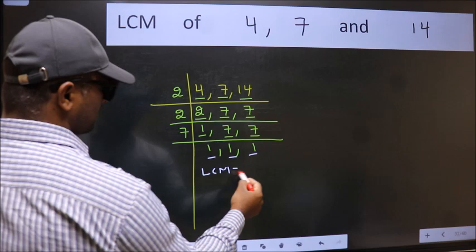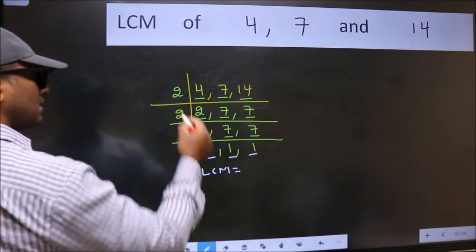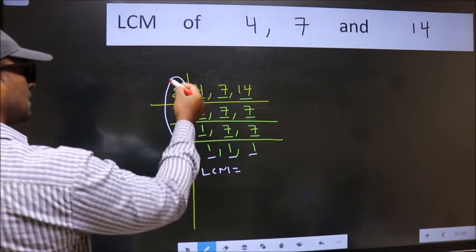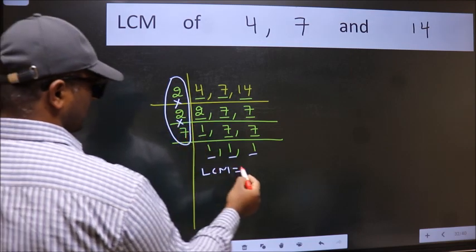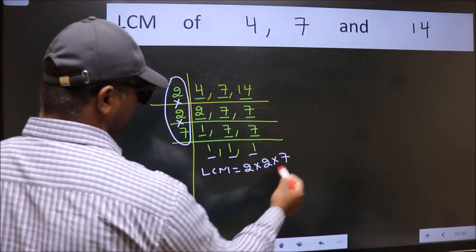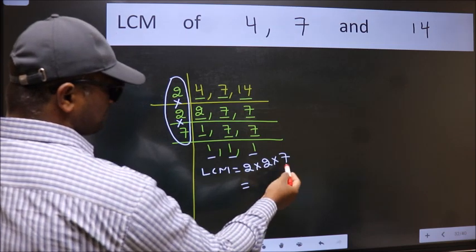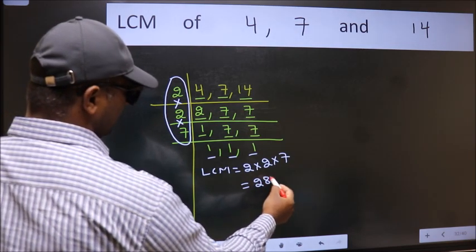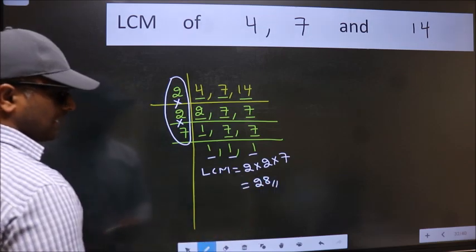So our LCM is the product of these numbers. That is 2 into 2 into 7. When we multiply these numbers, we get 28 is our LCM.